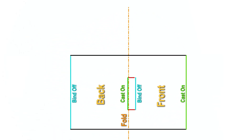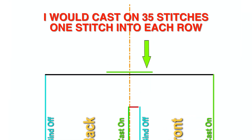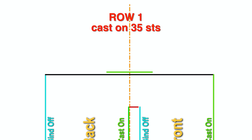So this is what I would do: I would turn my work sideways. I would measure where the halfway point is, so I would have 17 stitches on one side and 18 on the other — or 18 and 18. You do need to take the pattern into consideration, so you may need to add a stitch or two. Then I would cast on into every stitch along the rows, picking up 35 stitches total — that would be my first row.